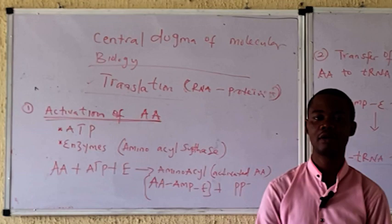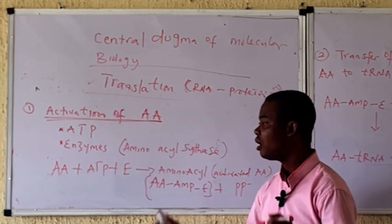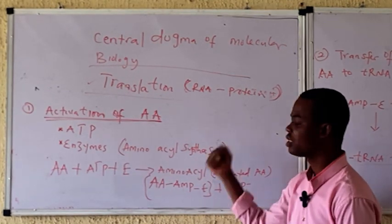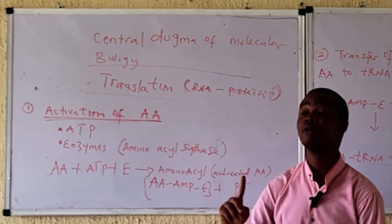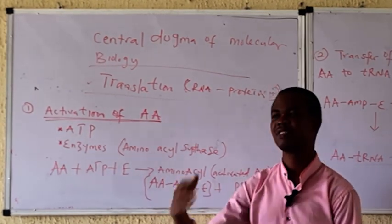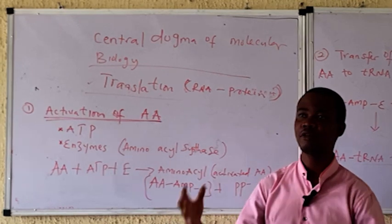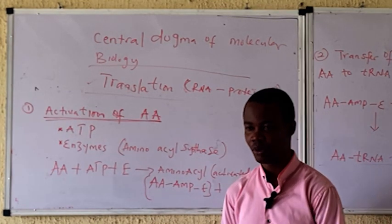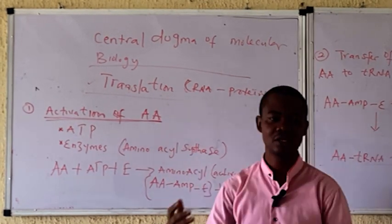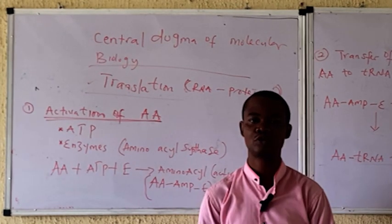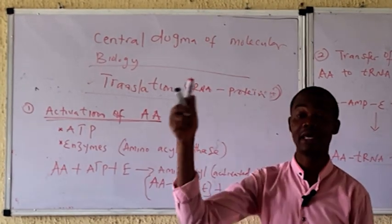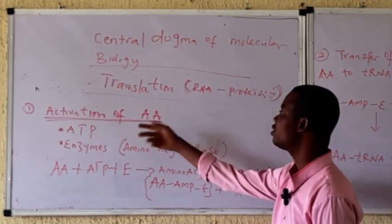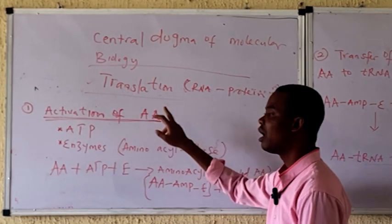Amino acids are present in the cells. We must not forget that translation takes place in the cytoplasm. After the formation of mRNA during transcription, the mRNA leaves the nucleus into the cytoplasm. So translation takes place in the cytoplasm, while transcription takes place in the nucleus.